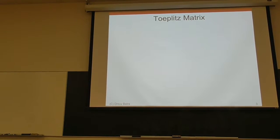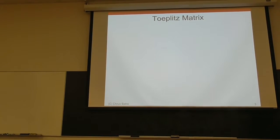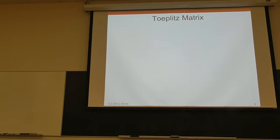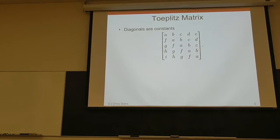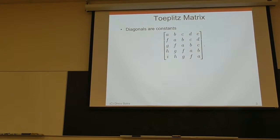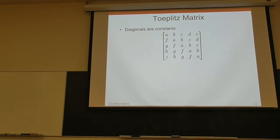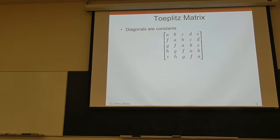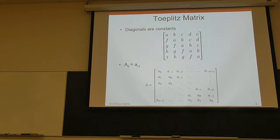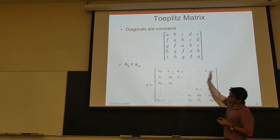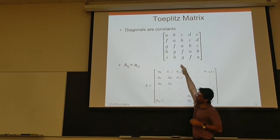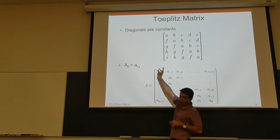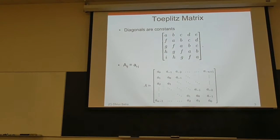So a Toeplitz matrix — what is it? It's a matrix where the diagonals are constant. The main diagonal has all A's, the off-diagonal plus one has all B's, and so on. Another way of expressing it: the distance from the main diagonal is all that matters. A_ij is basically A of i minus j — that's what a Toeplitz matrix is.